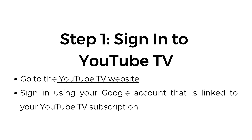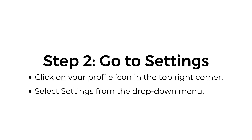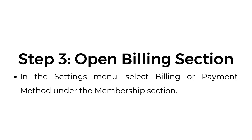Step one: sign in to YouTube TV. Go to the YouTube TV website and sign in using your Google account that is linked to your YouTube TV subscription. Step two: go to settings. Click on your profile icon in the top right corner and select settings from the drop-down menu. Step three: open the billing section. In the settings menu, select billing or payment method under the membership section.